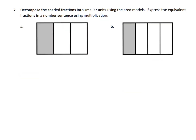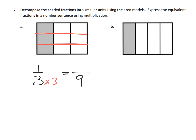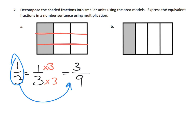We're supposed to decompose these shaded fractions into smaller units using the area model, and then show the equivalence using multiplication. We begin with one third. Let's cut this into three pieces — we're going to cut each third into three pieces. Each of these thirds got cut into three pieces, giving us nine pieces total. The one piece that was shaded in also got cut into three pieces, so we now have three ninths. One third is equivalent to three ninths.